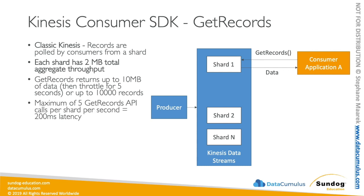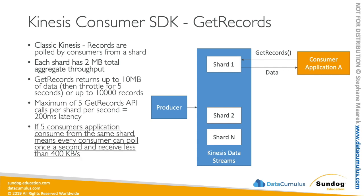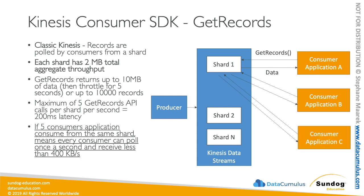There's also a limit of five GetRecords API calls per shard per second, meaning your consumer application can only poll five times per second. This results in a 200-millisecond latency — remember that number, it's important. If five consumer applications all consume from the same shard, each can effectively poll once per second and receive less than 400 kilobytes per second. The more consumers you have, the less throughput each gets, as they all share the two megabytes per second and five API calls per second limits. Kinesis Enhanced Fanout will solve this problem.